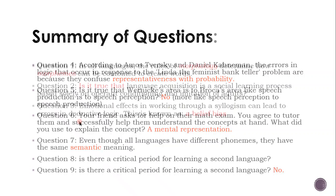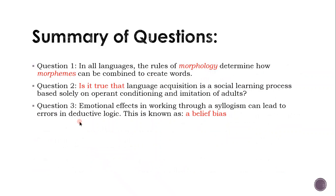Summary of questions. In all languages, the rule of morphology determines how morphemes can be combined to create words — morphemes combine to create words according to the rules of morphology. And no, it is not true that language acquisition is a social learning process based solely on operant conditioning and imitation of adults — operant conditioning involves biological stimulation, and there's just so much more to language acquisition than copying adults.